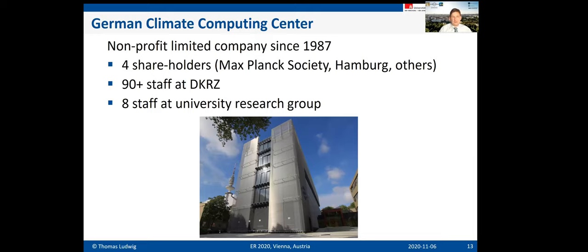This is where the German Climate Computing Center provides the infrastructure to make such simulations possible. It was founded in 1987, has four shareholders, and grew out of a joint compute center between the University of Hamburg and the Max Planck Institute for Meteorology. It is operated as a non-profit limited company with about 90 staff, and my research group is also integrated there, focusing on storage systems.